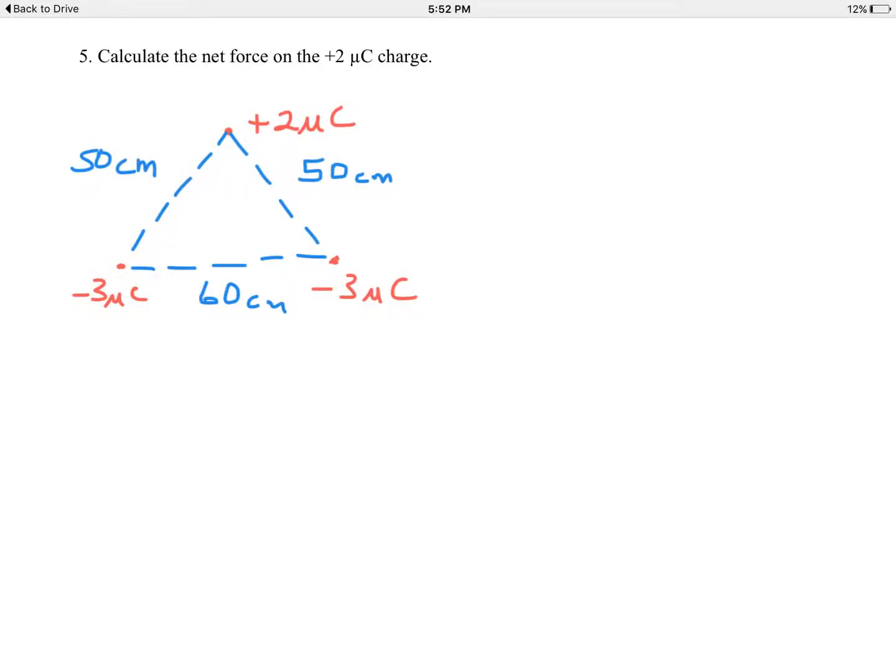Day 130, electrostatics example number five. Given these three charges at the corners of this isosceles triangle: the plus two microcoulombs (micro is 10 to the negative sixth coulombs), and the negative three microcoulomb charges at the base of this isosceles triangle, figure out the net force on the plus two at the top.